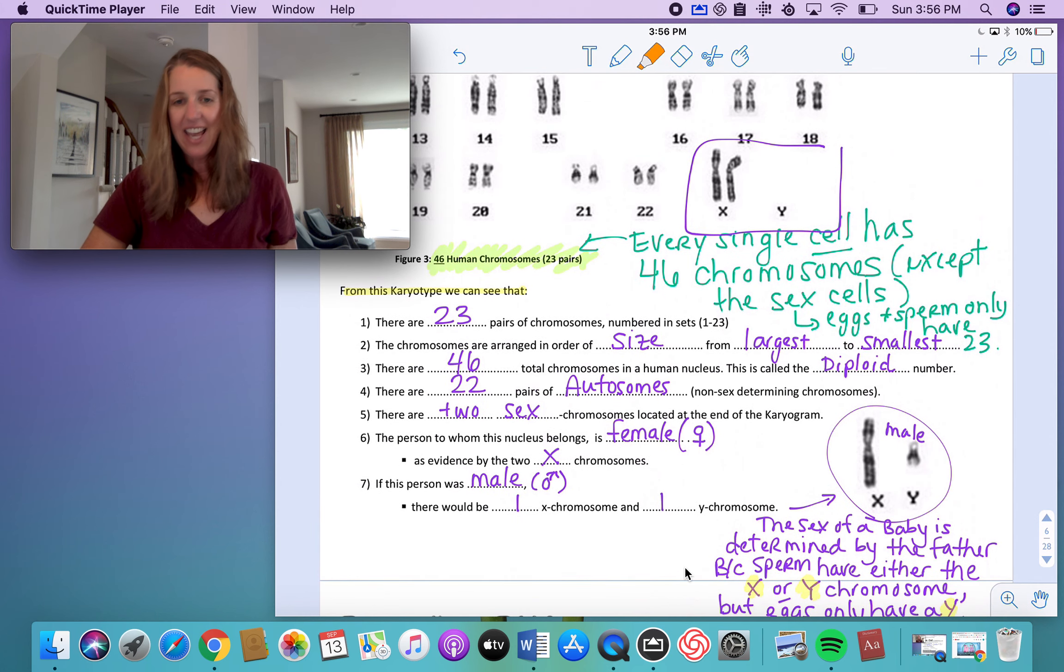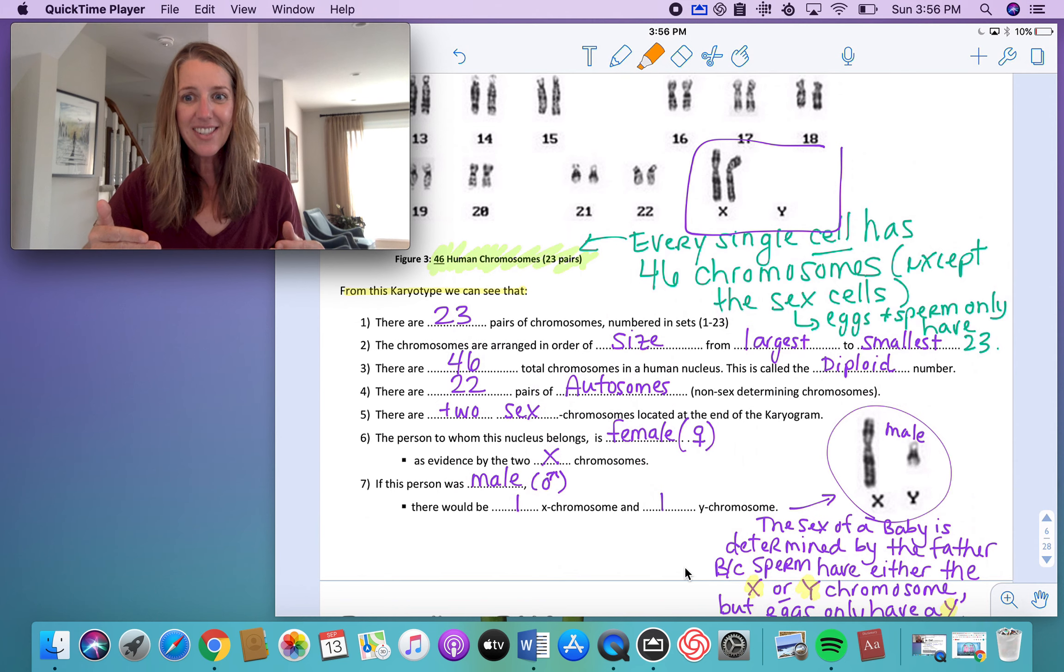Every single cell in your body has 46 chromosomes, except for those sex cells, because gametes, which are eggs and sperms, have to have only 23. Now, I know this is a lot of information to go through in grade 10, but it makes sense to talk about it now because we're talking about your nucleus, we're talking about the DNA, and we're talking about what does that mean. If we're talking about building proteins and building stuff, it's important to talk about what that stuff looks like, and it's important to talk about where that information comes from.